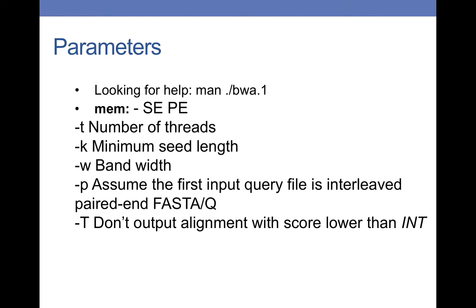The parameters you could use with BWA: the most frequently used command is mem, which can work for both single-end and paired-end data. There are some parameters you can use along with it. First, -t, which is number of threads you want to use. -k, which is the minimum seed length. BWA will not match sequences shorter than this number. And -w, which is the bandwidth.